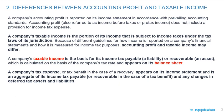A company's taxable income is the portion of its income that is subject to income taxes under the tax laws of its jurisdiction. Because of different guidelines for how income is reported on a company's financial statements and how it's measured for income tax purposes, accounting profit and taxable income may differ. A company's taxable income is the basis for its income tax payable — a liability — or recoverable — an asset — which is calculated on the basis of the company's tax rate and appears on its balance sheet. A company's tax expense or tax benefit appears on its income statement and is an aggregate of its income tax payable or recoverable and any changes in deferred tax assets and liabilities.